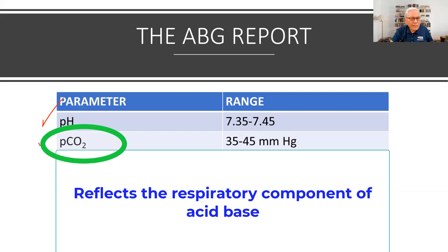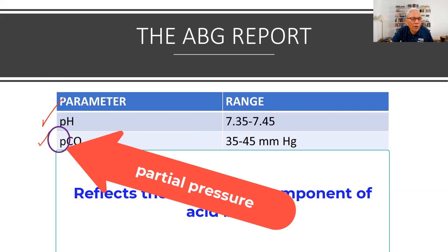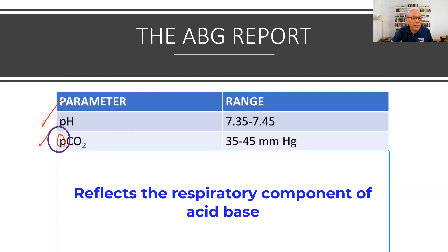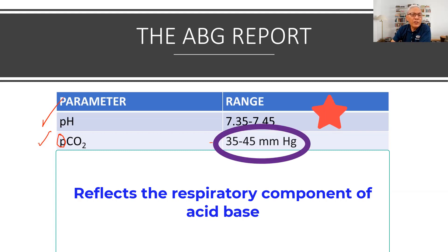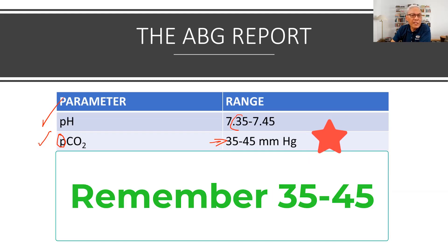You might be wondering, what does the P stand for? The lowercase p represents the partial pressure of carbon dioxide in arterial blood. The range is anywhere from 35 to 45. Normal pH is 7.35 to 7.45, and PCO2 is 35 to 45 — those numbers are a lot easier to remember.